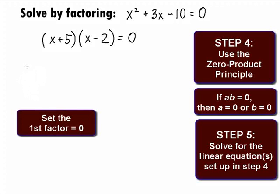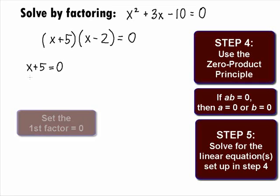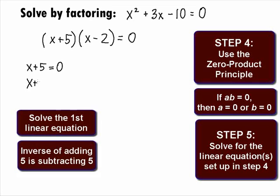Setting the first factor equal to 0, we get x plus 5 equals 0. We can solve this by doing the inverse of adding and subtract 5 from both sides. This will give us x plus 5 minus 5 equals 0 minus 5. This leads us to one solution of x equals negative 5.